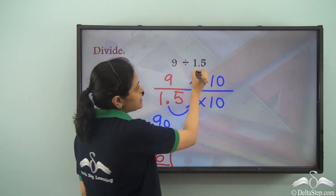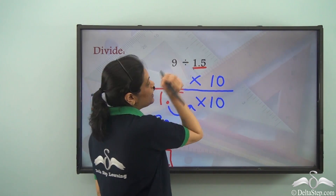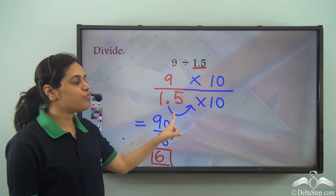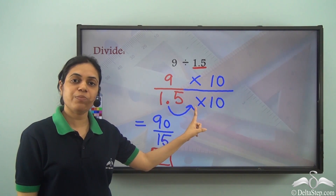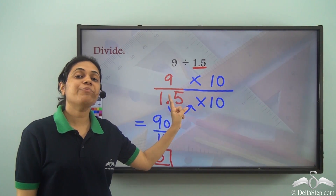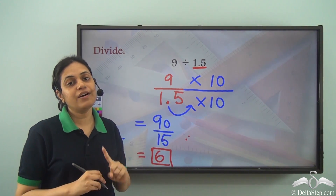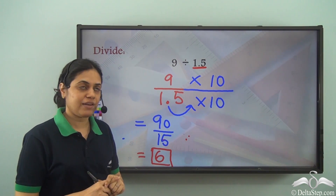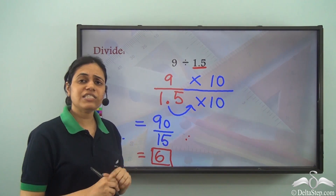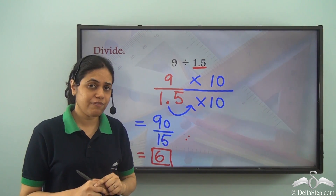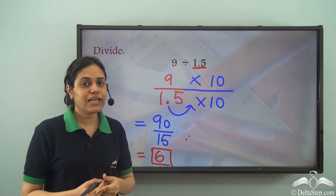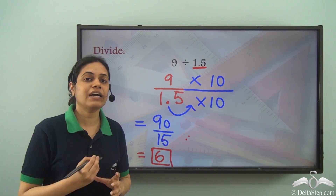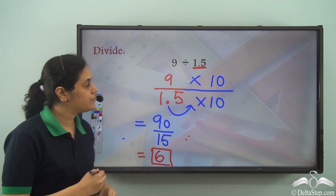So if there is a decimal point in the divisor, I need to remove it by multiplying with the correct power of 10. And if there is a decimal point in the dividend, we put the decimal point at the correct place in the quotient.